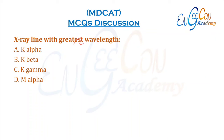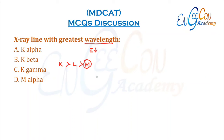X-ray line with the greatest wavelength. Greatest wavelength corresponds to the line with least energy. Among K, L, and M lines, K lines are the most energetic, followed by L, then M. So M lines have the least energy and therefore the greatest wavelength. D is the correct option.